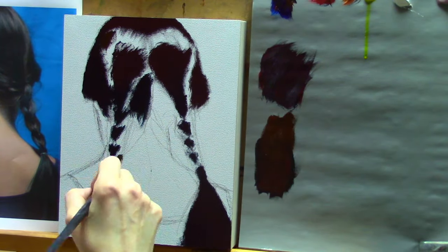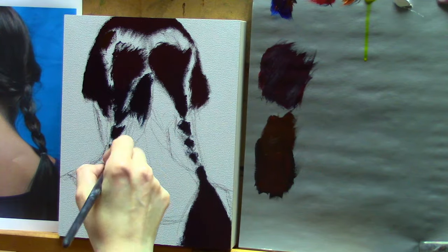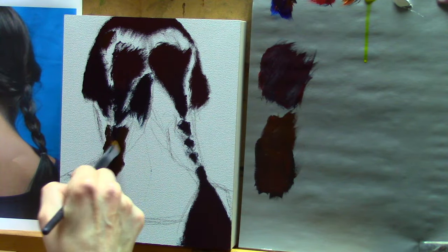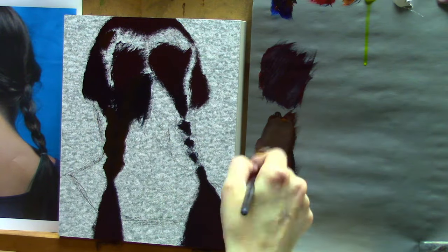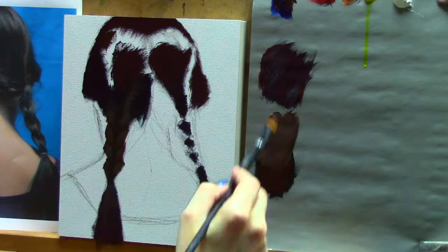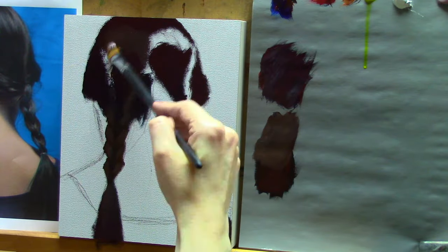So I keep everything really dark because I have intentions of layering highlights on top. And if I start off really light, I don't have anywhere to go with my highlights and it's not going to look like my hair.